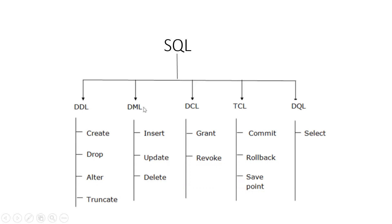DML is Data Manipulation Language. When our table structure is ready, we can insert data — that means rows. DML is responsible for that. We can insert new records, update existing records, and delete records that are no longer useful. The key difference: DDL is for anything related to table structure, while DML is for the data inside the table.